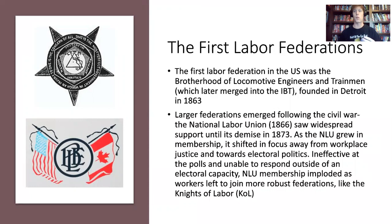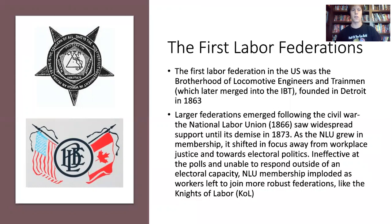The first labor federation that includes more than one industry was the National Labor Union, founded in 1866. You don't need to remember that date — but it helps to look at 1866 and note that this is pretty much as soon as the Civil War ends. You see the collapse of the chattel slave system, and the erosion of the free labor system that had existed in the Midwest starting to lose ground to the industrial wage system. The National Labor Union around this time is formed and sees pretty widespread support until its demise less than a decade later.